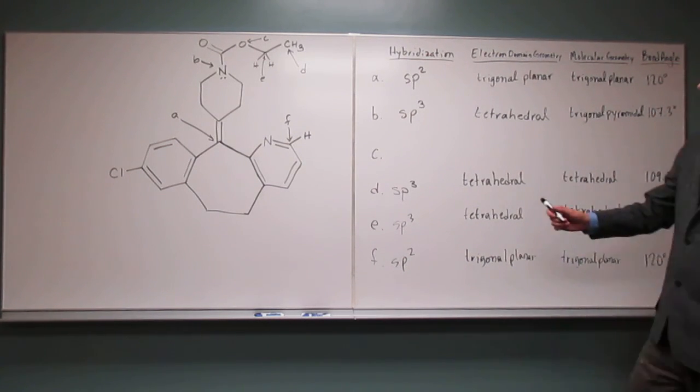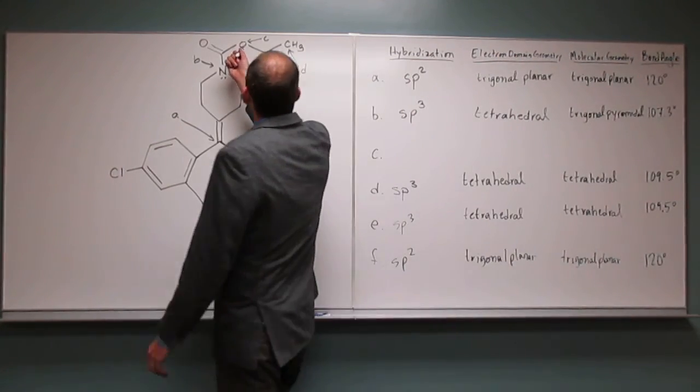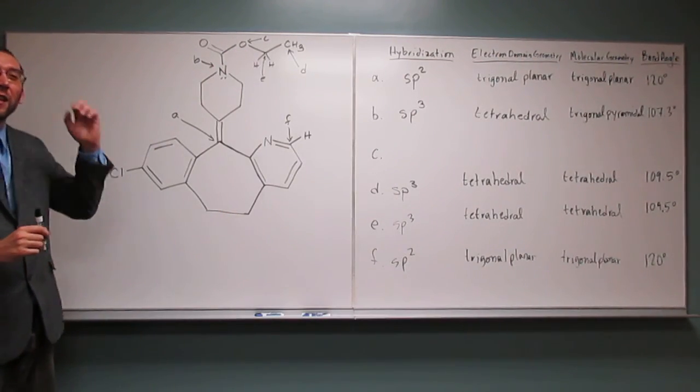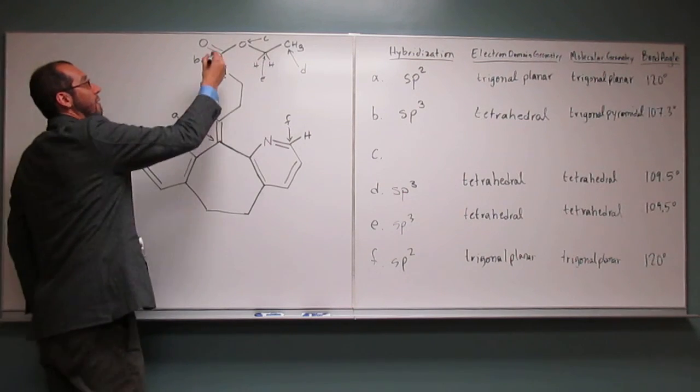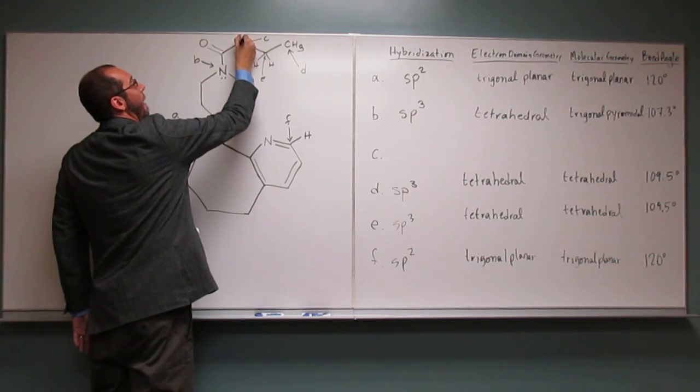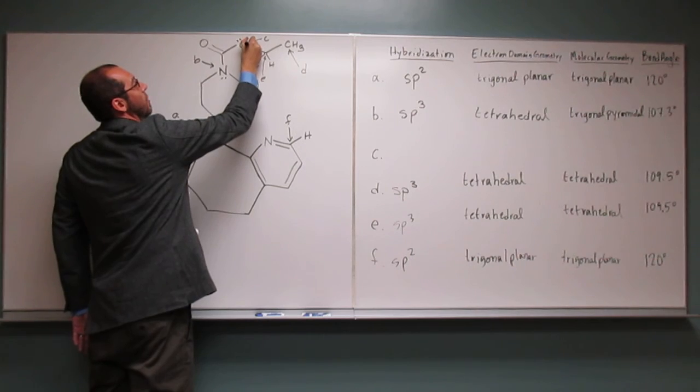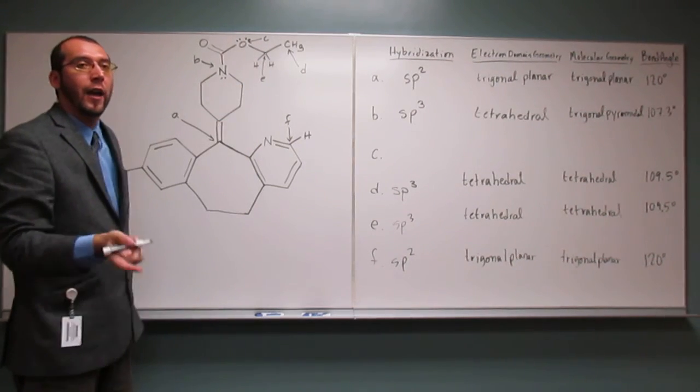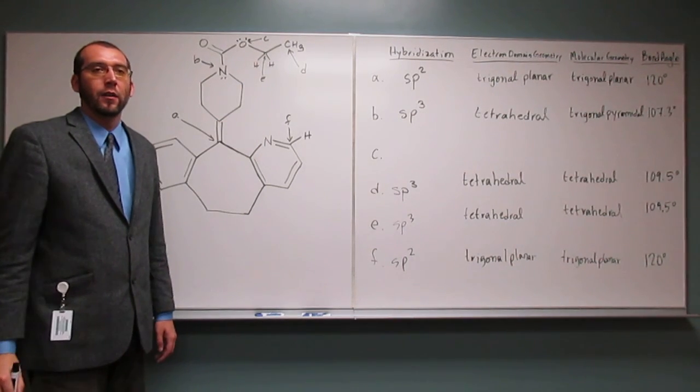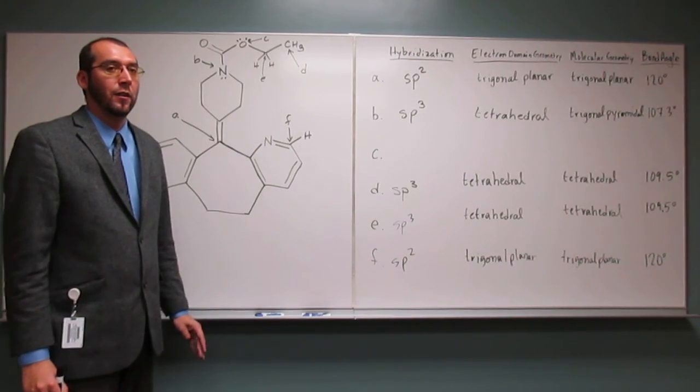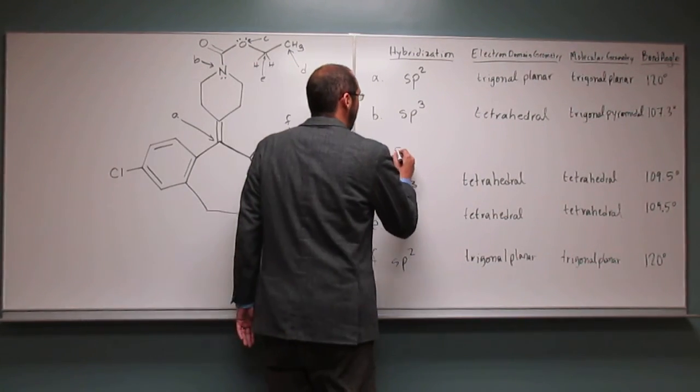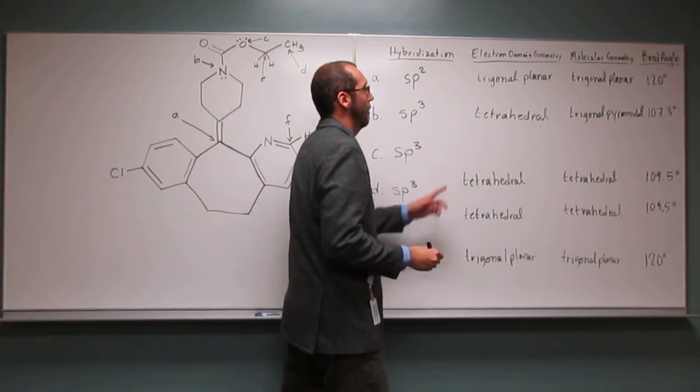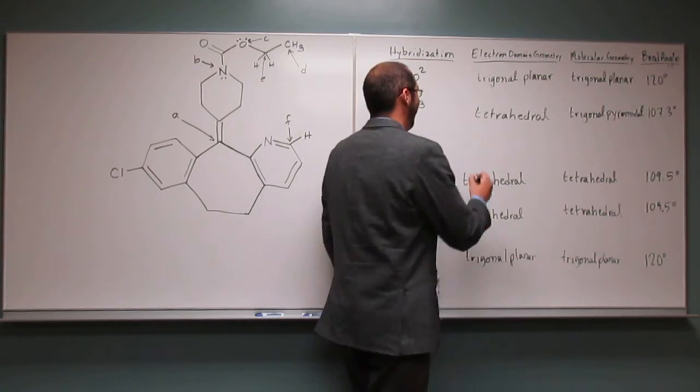Okay, and then last is C, right? So how many lone pairs are on C? Two. Two lone pairs. So let's draw them out. Remember, a pair, one pair is two electrons, okay? So how many electron groups do we have here? Four. Four. So what's the hybridization? SP3. SP3. If that's the case, what's the electron domain geometry? Tetrahedral. Very good.